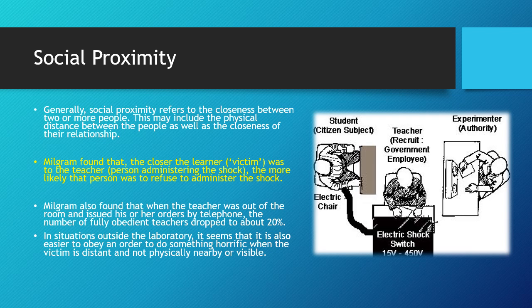Social proximity refers to the closeness between two or more people, including the physical distance between them as well as the closeness of their relationship. Milgram found that the closer the learner — the victim — was to the teacher administering the shock, the more likely the person was to administer the shock. Similarly, if the researcher was in the same room, participants were more likely to obey. However, if the learner was in close proximity to the teacher, they were less likely to obey because they could see the pain — even though it was just a recording.